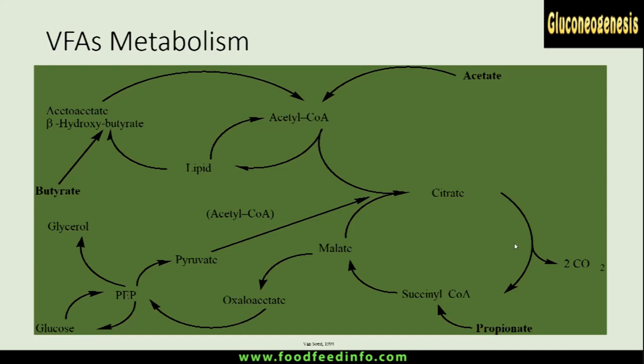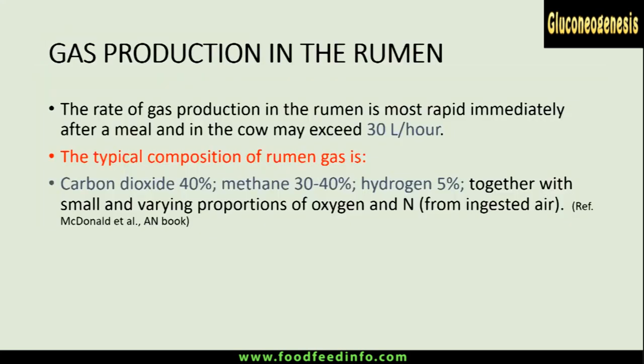There is always gas production when volatile fatty acids are produced. Gas production in the rumen is most rapid and immediate after a meal and may go up to 30 liters per hour. This depends upon the type of feed given to the animal — feeding more roughages results in more gas production.